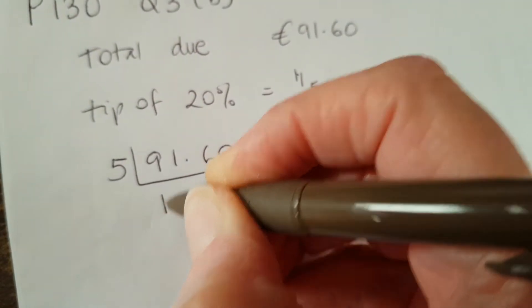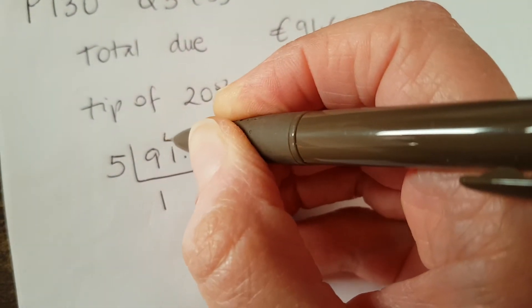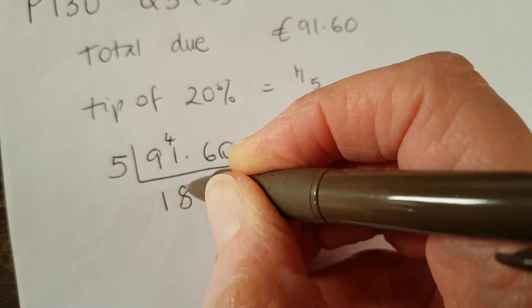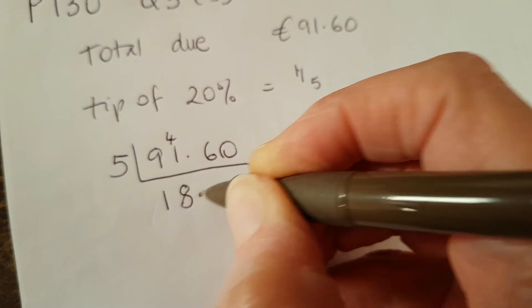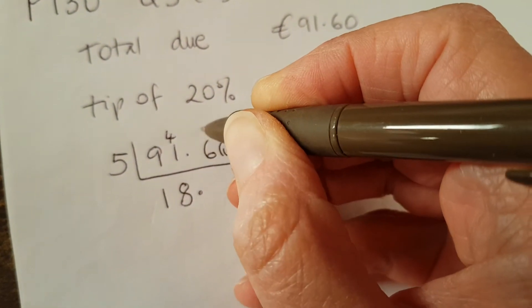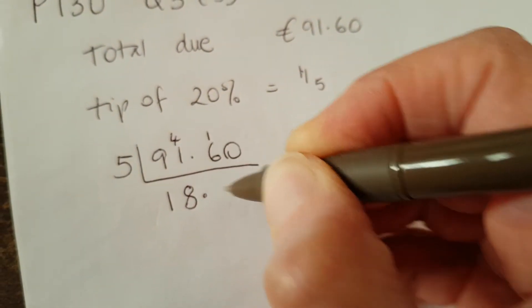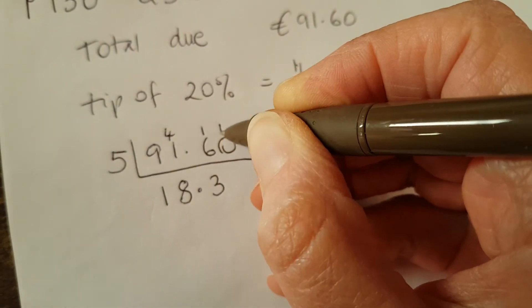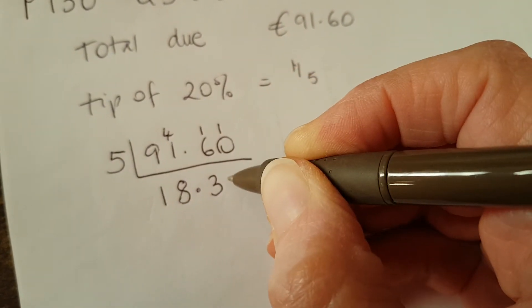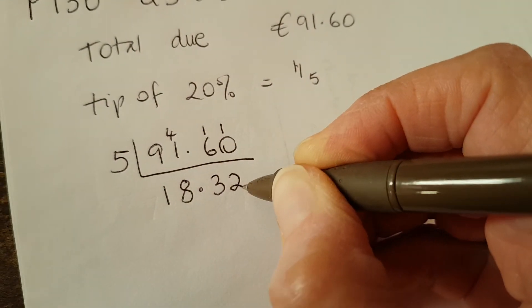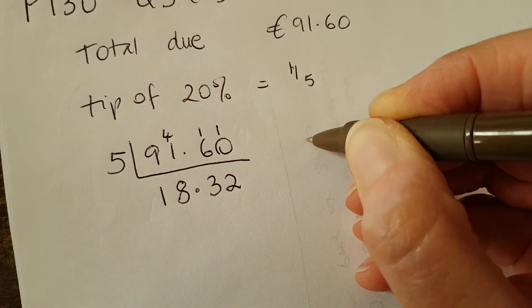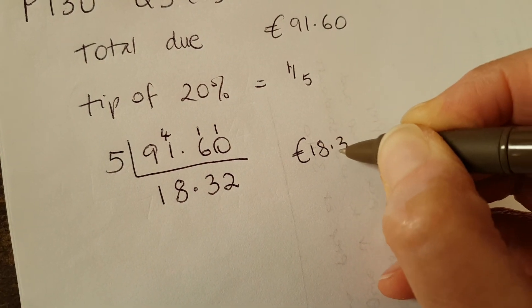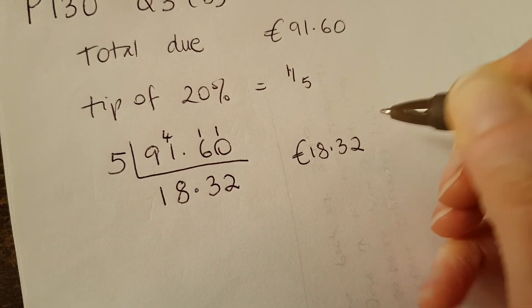5 into 9 goes once, carry my 4. 5 eighths are 40, decimal point, carry my 1. 5 threes are 15, and 5 into 10 goes twice. So the tip I left was 18 euro and 32 cent.